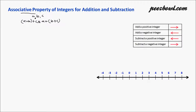This means that a, b, and c — three integers — are added in two different orders. On the left hand side, we have a plus b added together, and then we add c to that result. On the right hand side, b plus c are added together first, and then we add a to that result.